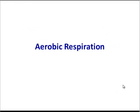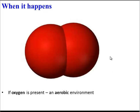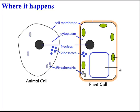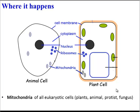Let's take a look. First of all, when does aerobic respiration happen? It happens when oxygen is present in the environment — in other words, when the environment is aerobic. Where does it happen? It happens in all eukaryotic cells, such as animal cells and plant cells, and specifically within the organelle mitochondria, which you'll find in any eukaryotic cell.